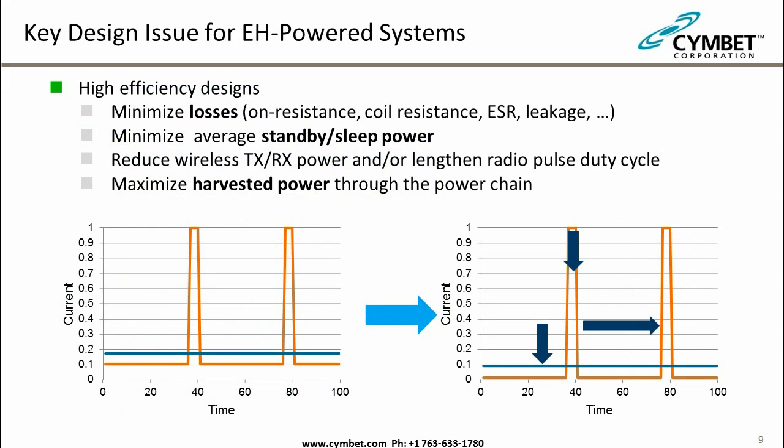Before getting into design details, here are two key concepts. The blue line on the chart represents average standby or sleep power — you want to minimize this as much as possible since the system spends most of its time here. The yellow waveform represents wireless transmission pulses that use a great deal of pulse current but happen infrequently. Reduce power per pulse and space out the time between pulses to minimize overall system power.